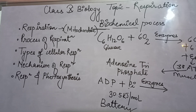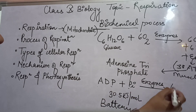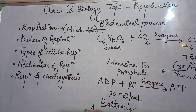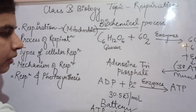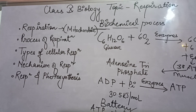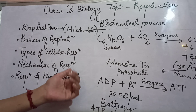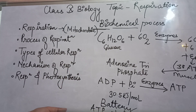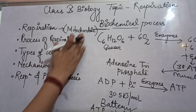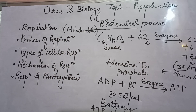ADP plus inorganic phosphate forms ATP, and then ATP gives energy — this is the concept of energy and why ATP is known as the energy currency of the cell. ADP combines with phosphate in the presence of certain enzymes to form ATP, and ATP then releases energy. This is the whole biochemical process of respiration: glucose breaks down in a stepwise manner and energy is released inside a living cell in the form of ATP — 38 molecules of ATP. How this number of 38 comes will be studied in higher classes.